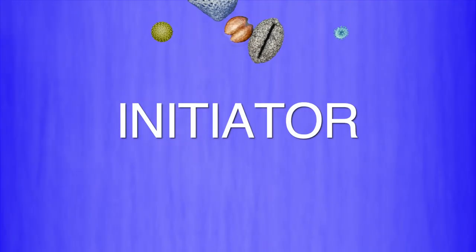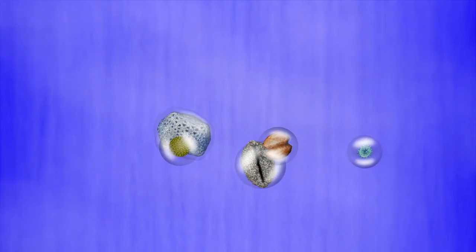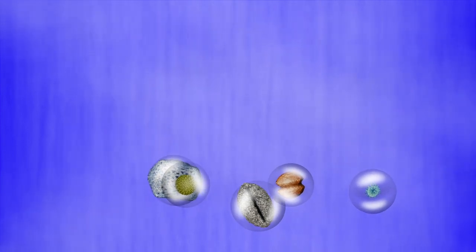Particles then travel into the initiator, where higher temperatures rapidly force water vapor into the flow stream, creating a supersaturated environment. Particles as small as 5 nanometers in size act as seed nuclei for condensation and grow into larger droplets.